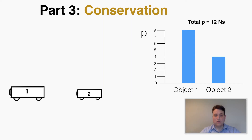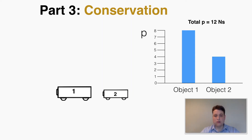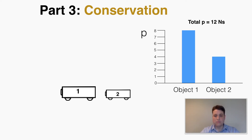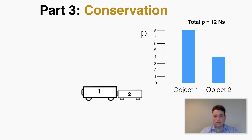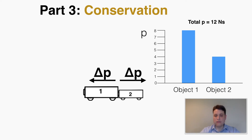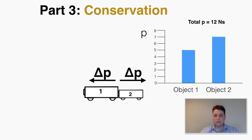As an example of what this looks like in problem-solving, imagine two carts moving in the same direction, but cart one has more momentum — eight Newton-seconds — and cart two has four Newton-seconds, so the total is 12. When they impact, whatever impulse object one gives to object two, object two gives back to object one in the opposite direction. So object one gives a chunk of its momentum over to object two, but the total remains at 12 — cart two has more momentum and cart one has less.